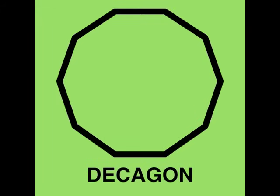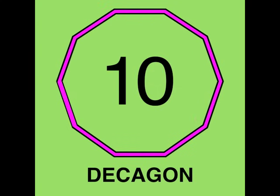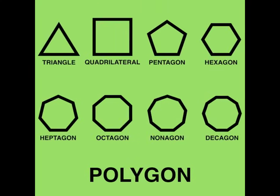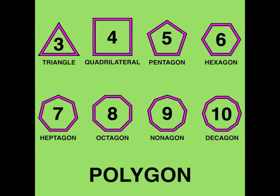A decagon is a polygon with ten angles, ten sides. A polygon is a shape with lines that connect. The number of sides tells us the name of the shape.